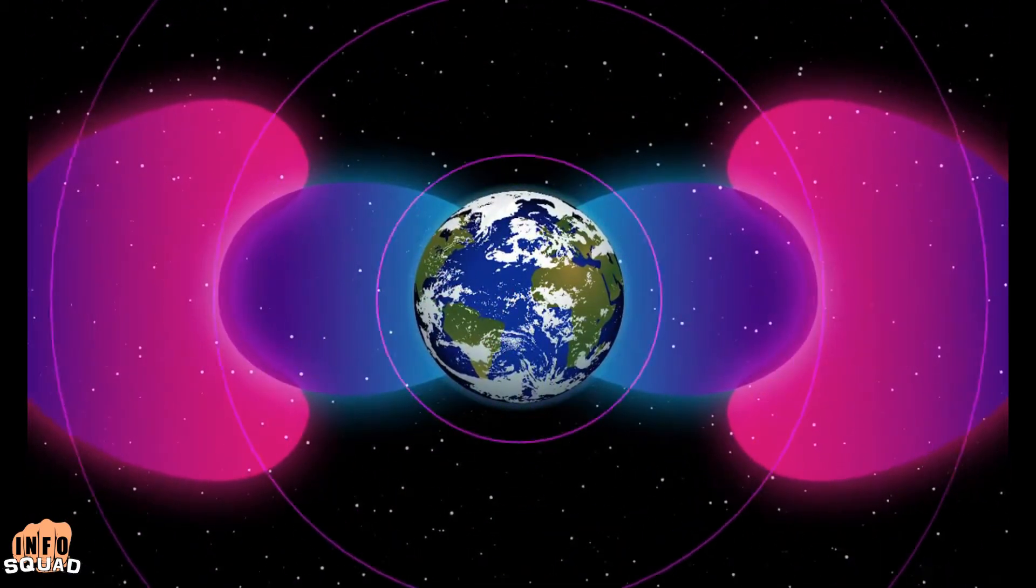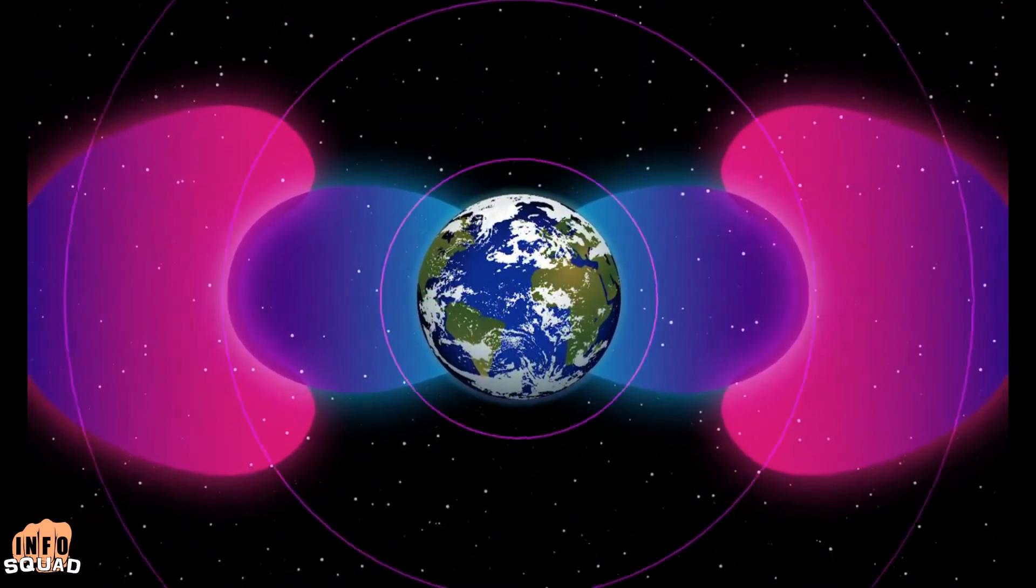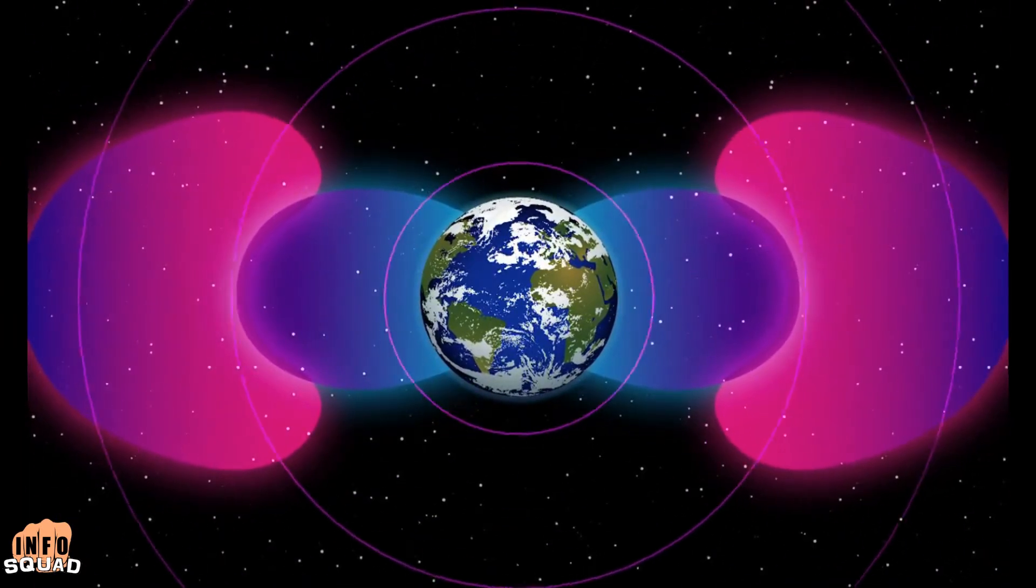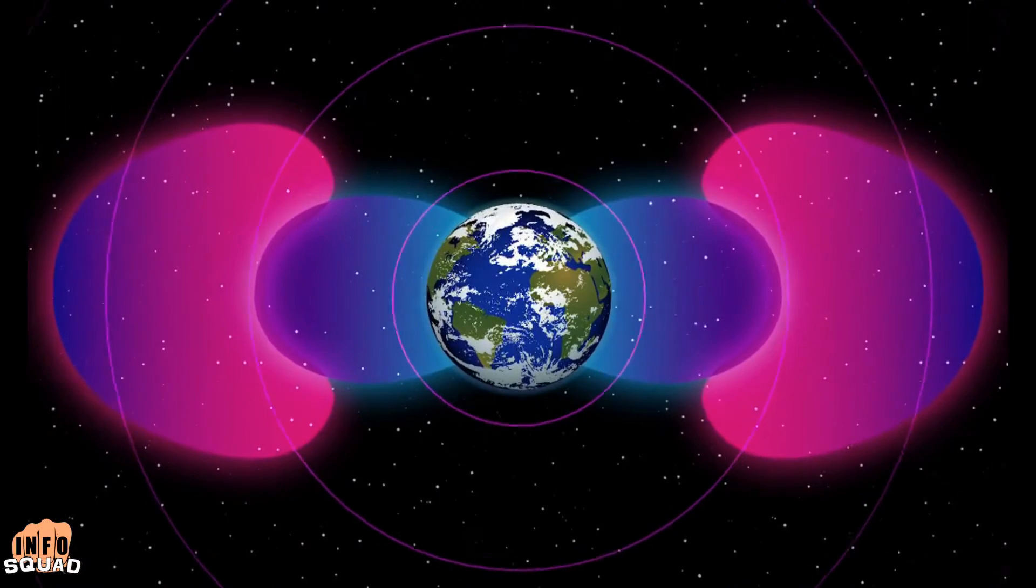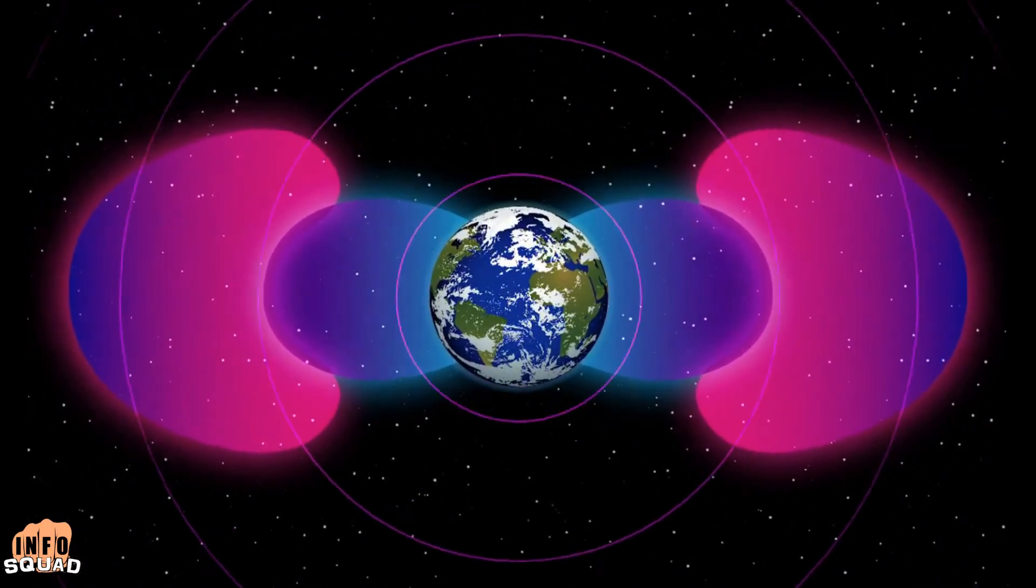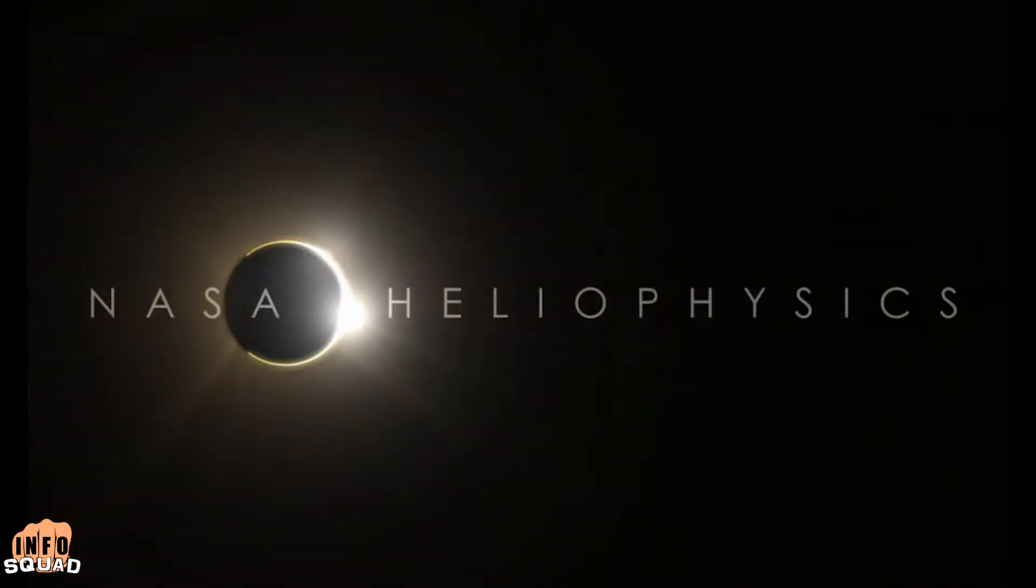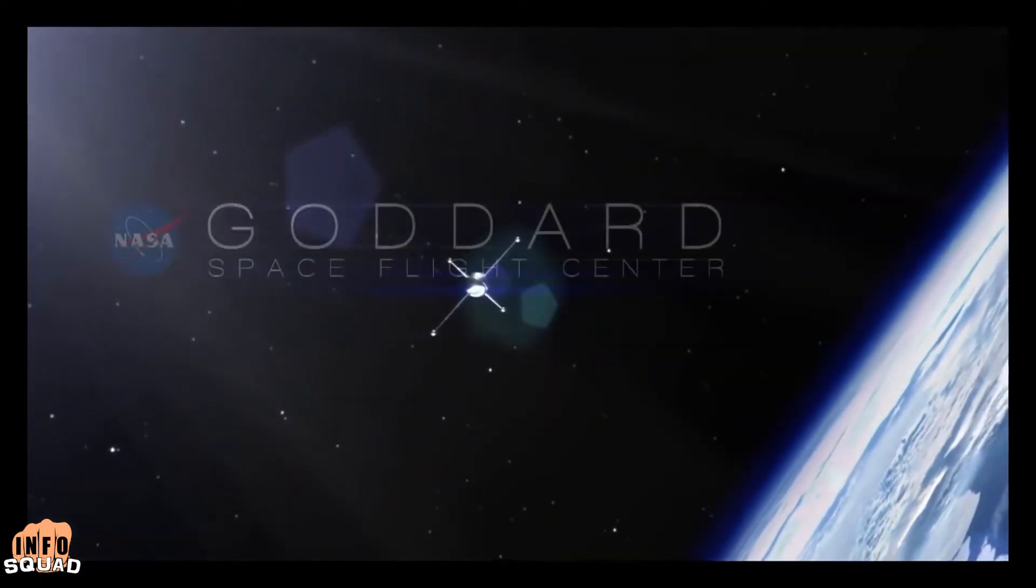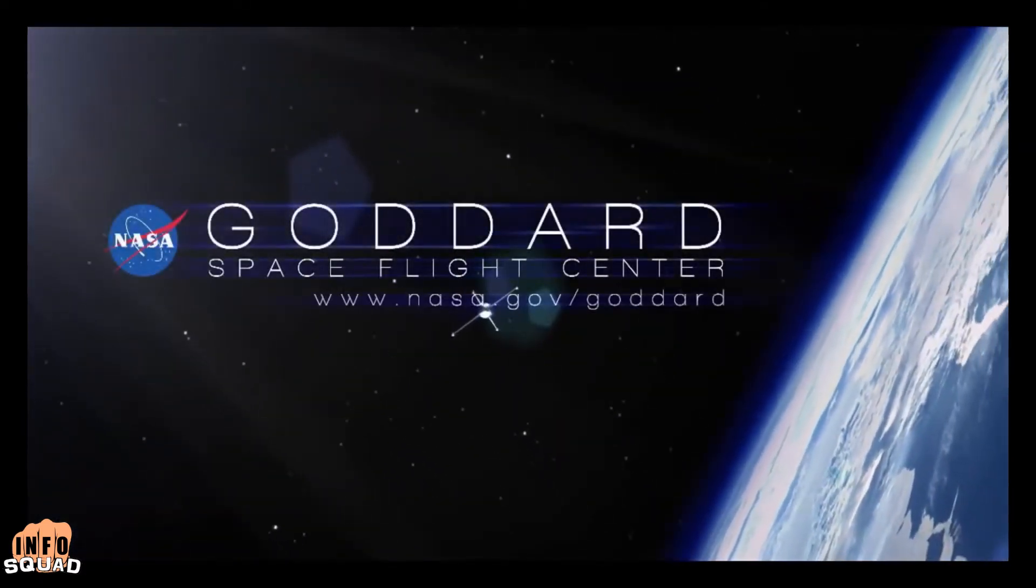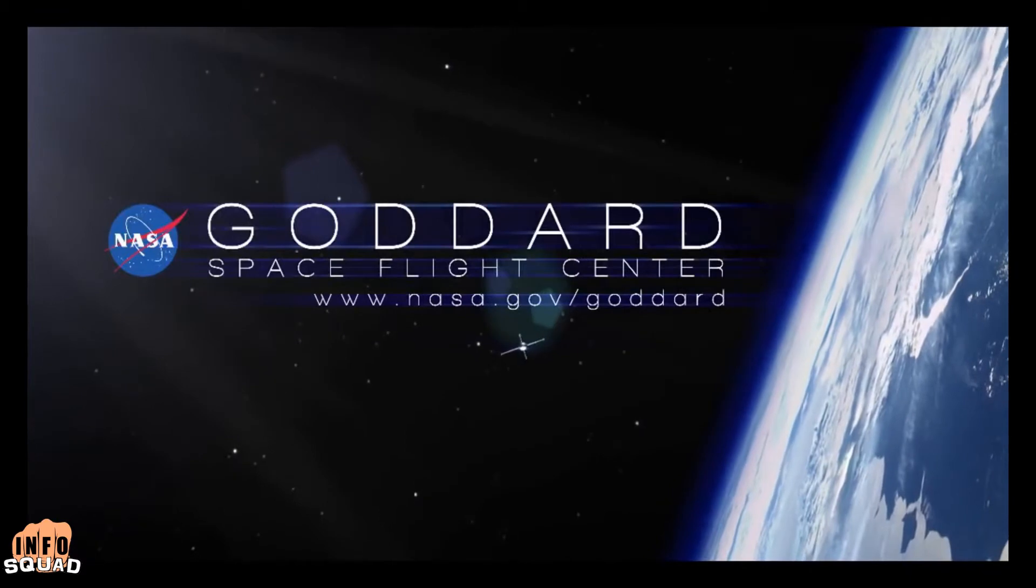VLF is used to communicate with submarines near the surface. This was the radio frequency band used in the past for transcontinental radio communication during the wireless telegraphic era. And nations built networks of high-powered, low-frequency and very low-frequency radio stations which they used to communicate text information by Morse code.